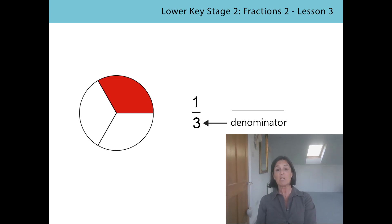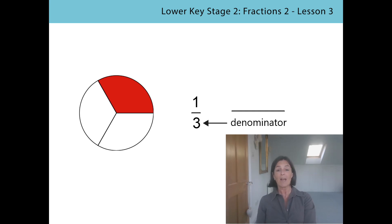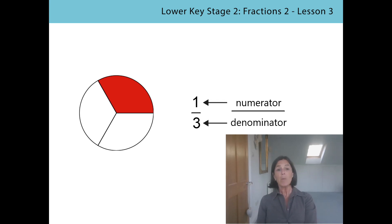I told you that you were going to learn some new language. This part of the fraction — the number at the bottom — has got a very special name: it's called the denominator. Denominator comes from the Latin word which means 'to name.' The final thing we need to look at is how many of those parts are shaded, and we write that number at the top of the fraction. This also has a special name: it's called the numerator, and numerator is also a Latin word meaning 'number.'